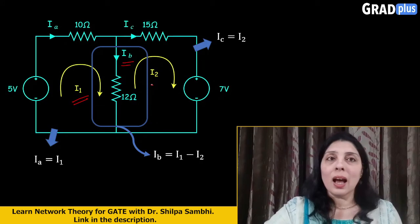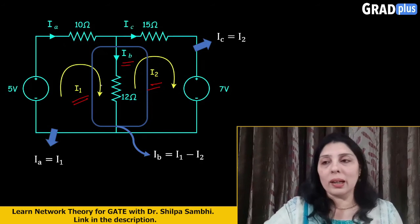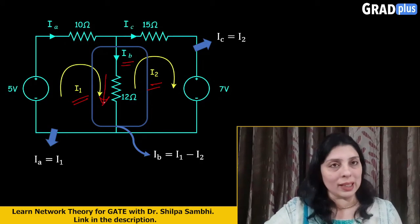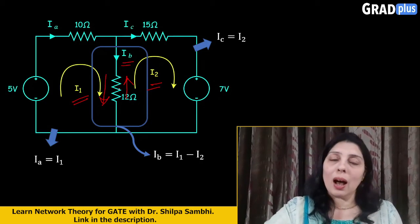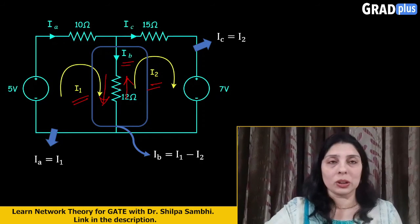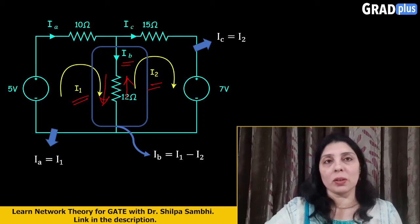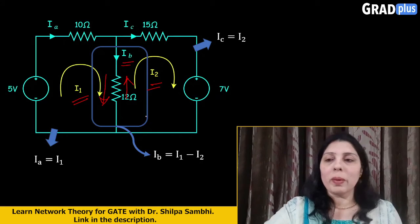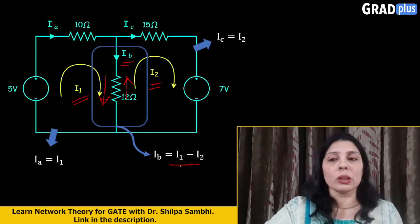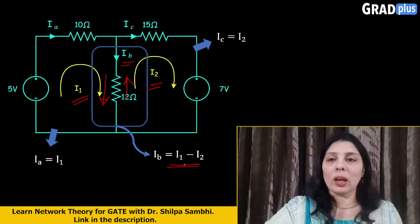So ultimately the direction of I1 is like this, I2 is like this, and because both are having the opposite directions, so we have to take the difference of the two currents. If we assume that I1 is greater than I2, then Ib will be equal to I1 minus I2.